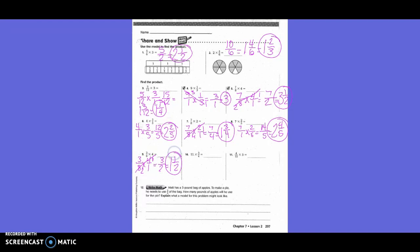Number ten: write it as eleven over one times three-fourths. Can I simplify before I begin? No. Eleven times three is thirty-three, one times four is four. So thirty-three-fourths: eight times four is thirty-two, thirty-three minus thirty-two is one. The answer is eight and one-fourth.